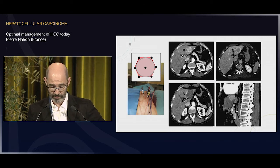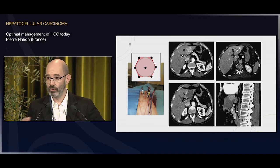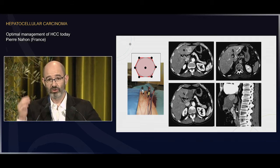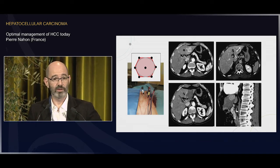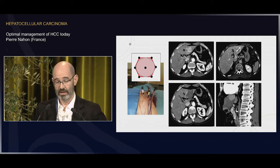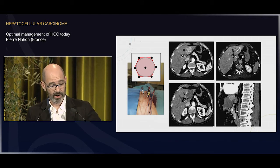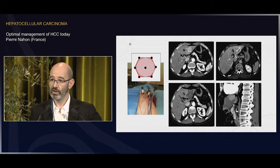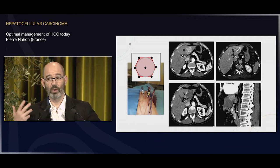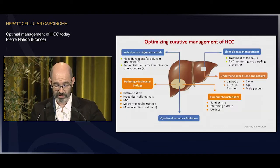For example, a five-centimeter tumor in a patient — referring to BCLC criteria — might be deemed unsuitable for ablation. If this patient cannot be operated on, you would normally decide on a palliative treatment such as TACE. But by inserting seven probes around the tumor, you can obtain necrosis and complete remission of the tumor using this technique. This is another way to optimize your curative strategies.